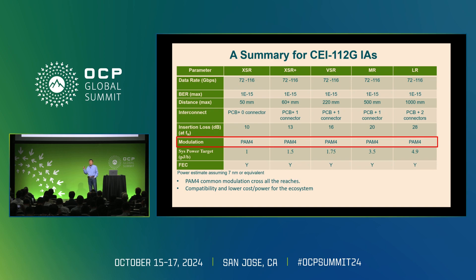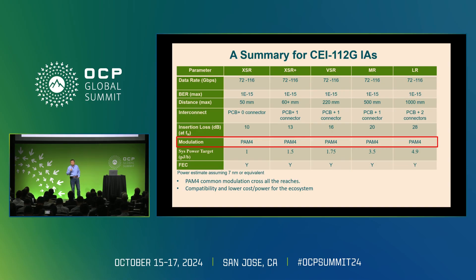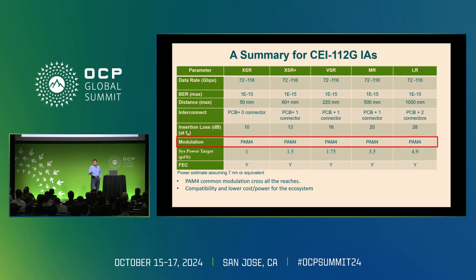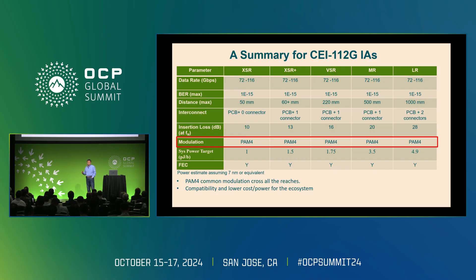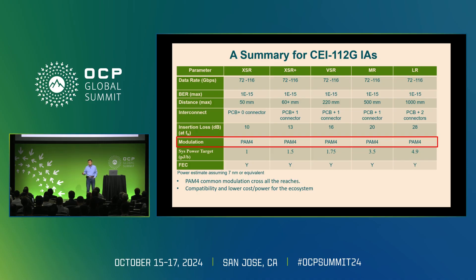Starting with 100G, within the CEI we defined five lanes at 100G — starting from the shortest within the package XSR, near package XR-plus, chip-to-chip, chip-to-module, and longer reach. The CEI tradition has been serving the industry; we're currently working on the 6.0 generation, and this is the fifth generation. The common theme is PAM4 crossing the board, which is important for the ecosystem because commonality assures compatibility.